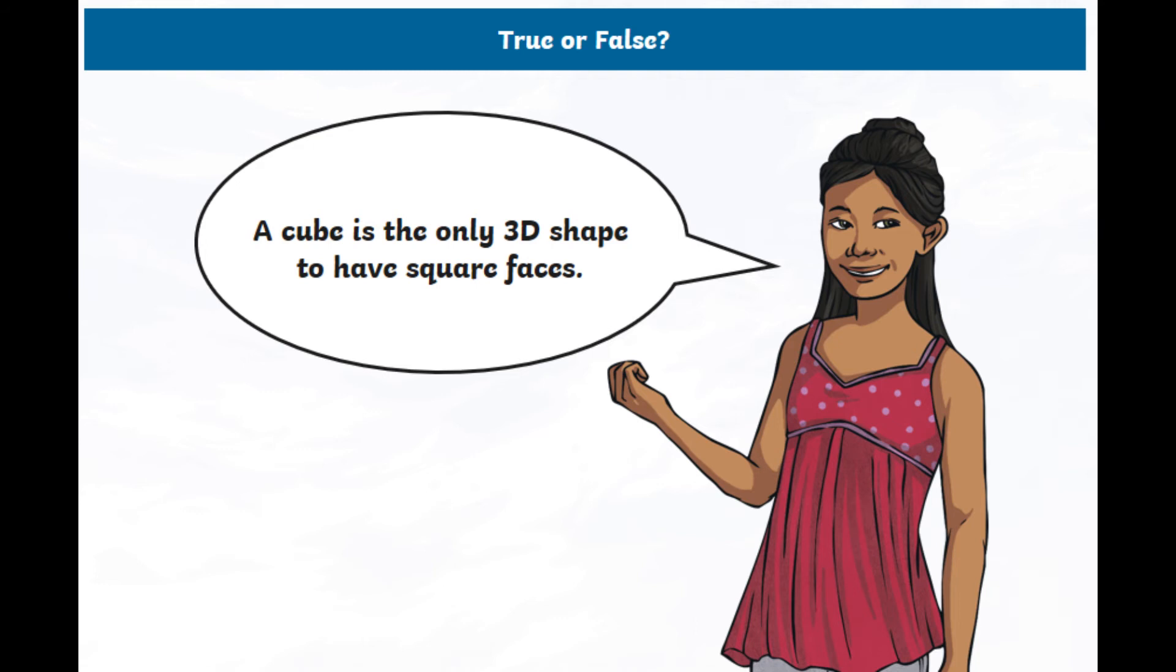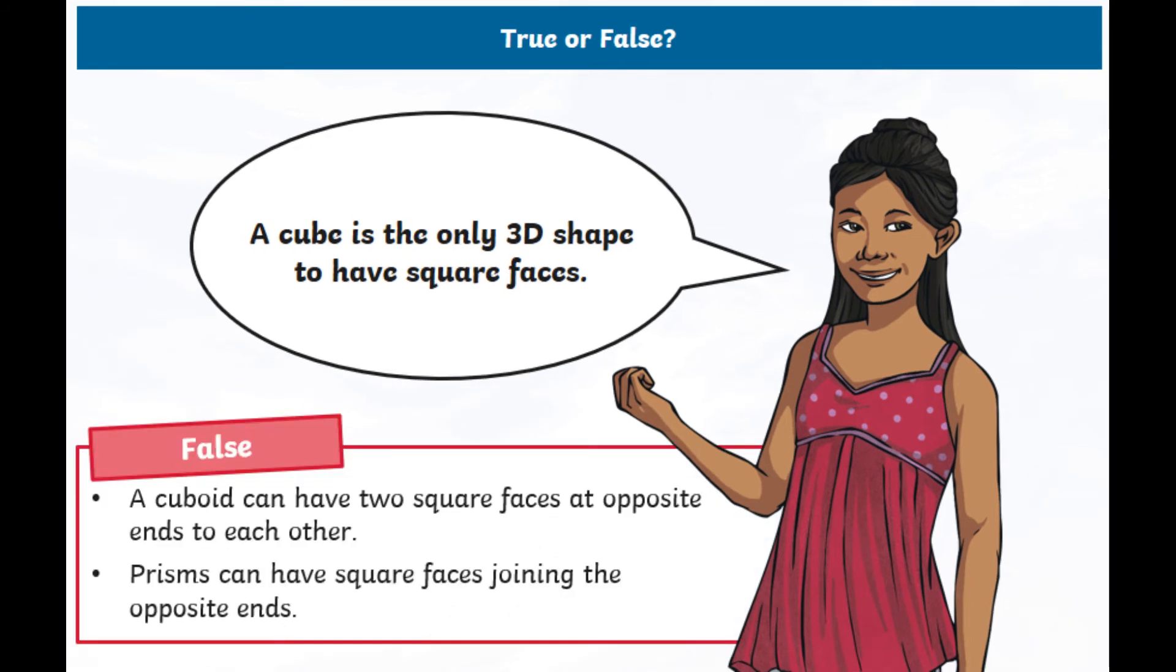My reason looks like this. It's false. A cuboid can have two square faces at opposite ends to each other. Prisms can have square faces joining the opposite ends. And if you think about it, we've seen some shapes already that have square faces that are not cubes. So you're already, hopefully, applying that previous knowledge.